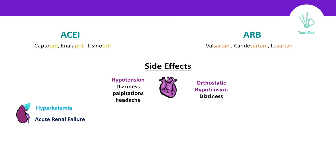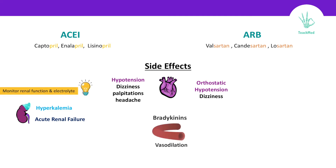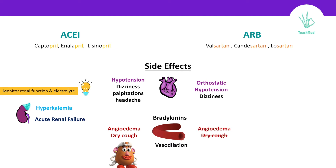They can also cause acute renal failure in someone with bilateral renal artery stenosis, so keep on monitoring their renal function as well as electrolytes. We talked about bradykinins and the cause of vasodilation, especially with ACE inhibitors — that's why they can cause angioedema and dry cough, which is less markedly seen with ARBs. Angioedema is a life-threatening condition; once you see it, you should switch the patient to ARBs or other medications. Both ACE inhibitors and ARBs are teratogenic, so never prescribe them for a pregnant lady.